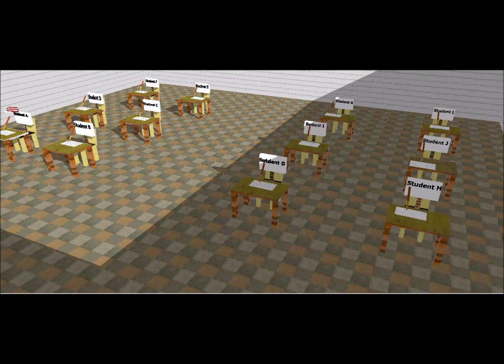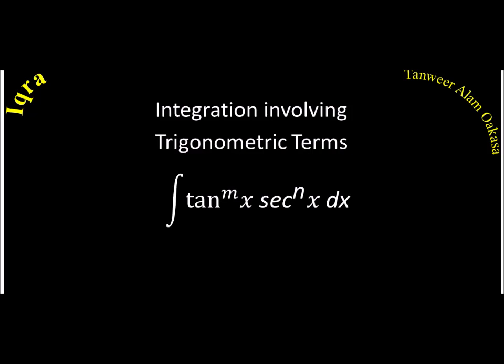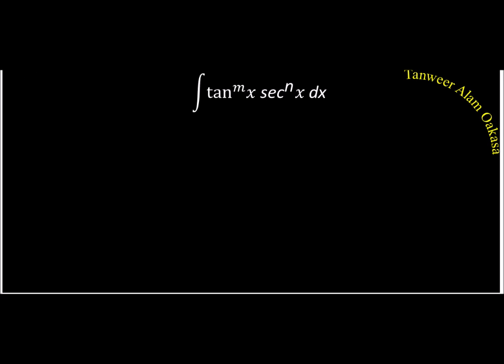So we start with tan to power m(x) and sec to power n(x) where m and n are positive integers. There is a particular technique: whenever you have tan to some power and sec to some power, the first step is to hide the tan part and look only at sec to power n(x) and its integral power.